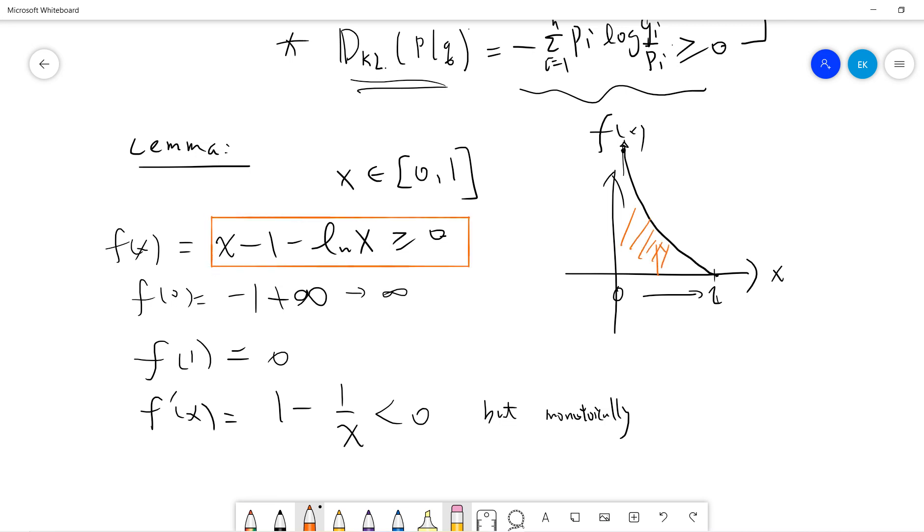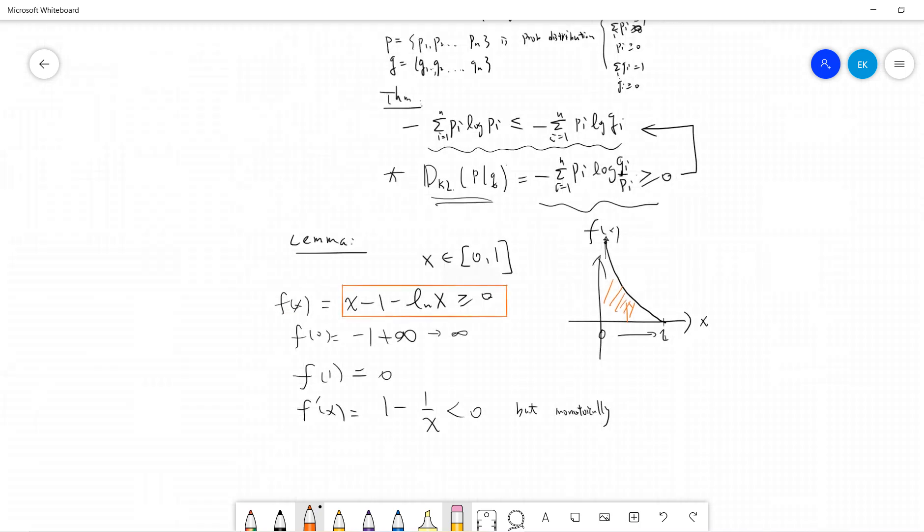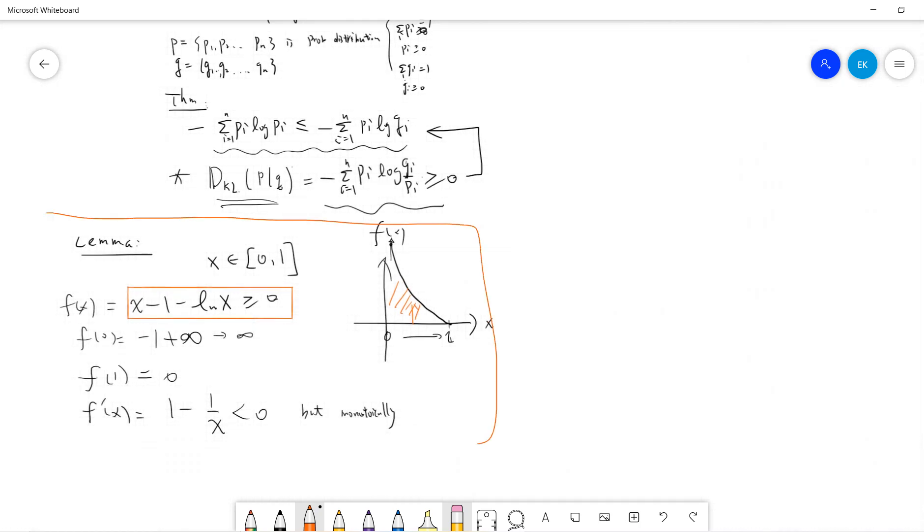Okay, so this is the lemma we will use. So let's quickly dive into the proof. So we start from here. Let me just consider this sum. So let's say I want to consider sum of Pi log(Pi/Qi). So let's take a look at this sum. But I can change this log as ln, and by the lemma...